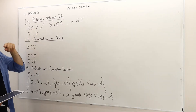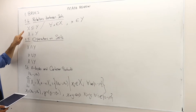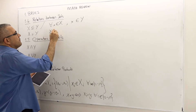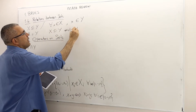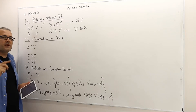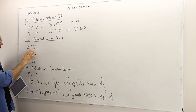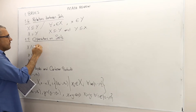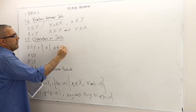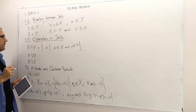Furthermore, there might exist some elements in Y which are not elements of X. Two sets are equal when X is a subset of Y and Y is a subset of X. If both of those statements are true, then these two sets are the same. For operations on sets — intersection, union, and difference — intersection formally means: the set of x such that x is in X and x is in Y.